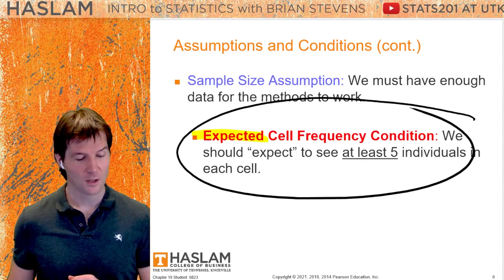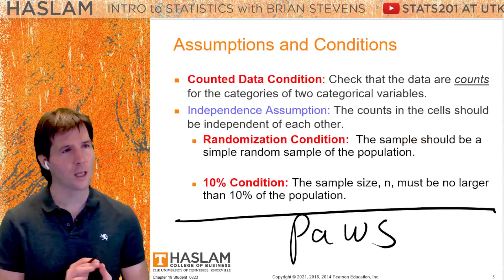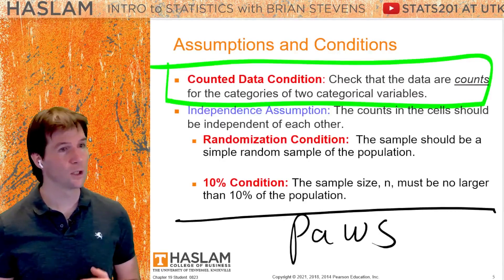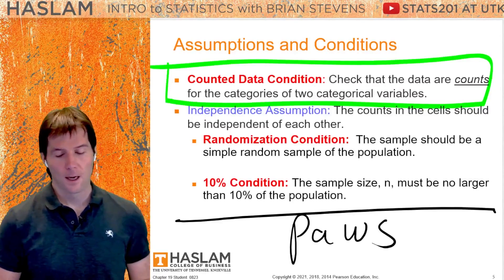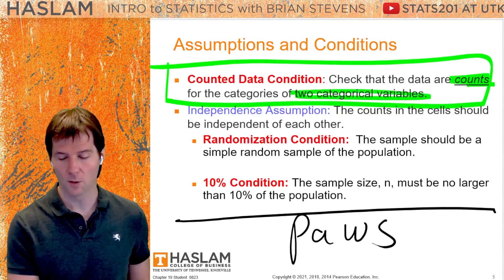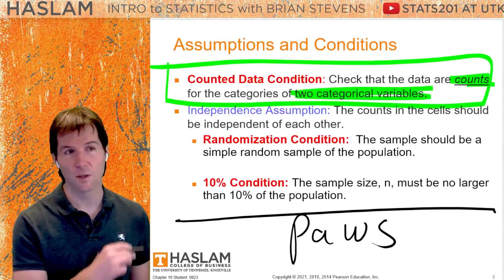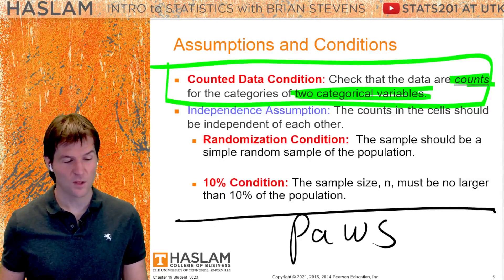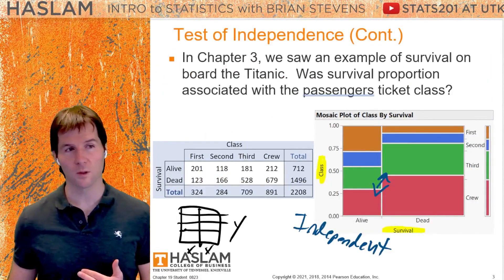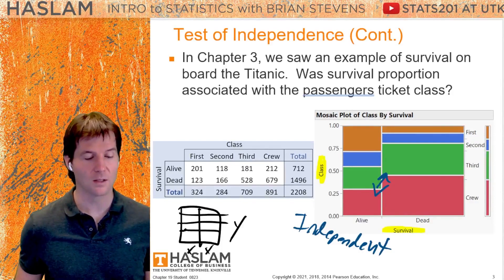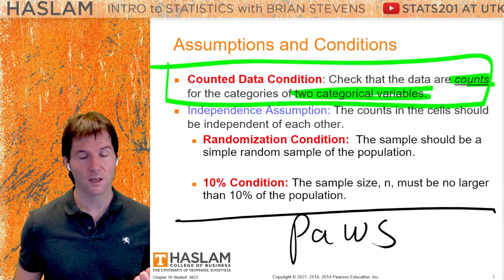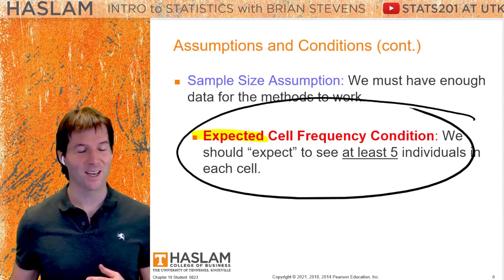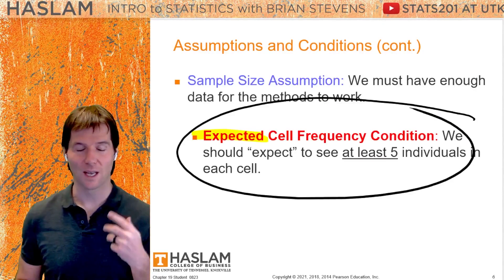The last condition is count data — both variables must be categorical. You are not doing the chi-squared test of independence if both variables are not categorical. If you see mosaic plots or contingency tables, you have two categorical variables, and thus you can do the chi-squared test of independence, as long as your data was collected randomly, you have less than 10%, and you have at least five expected cell counts. Condition 4 is count data.